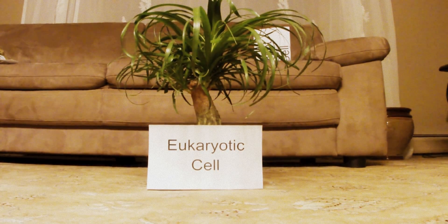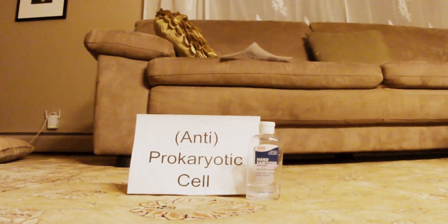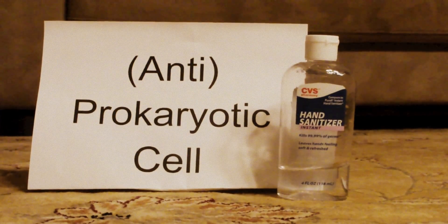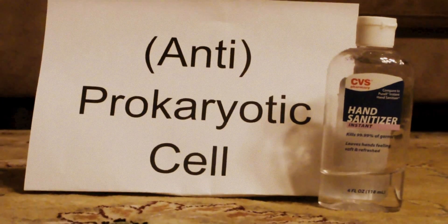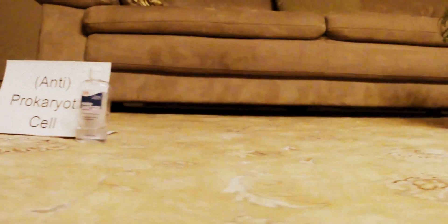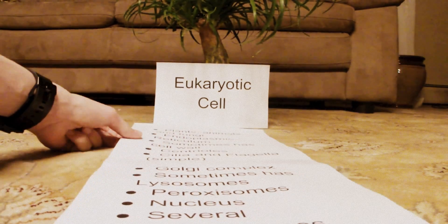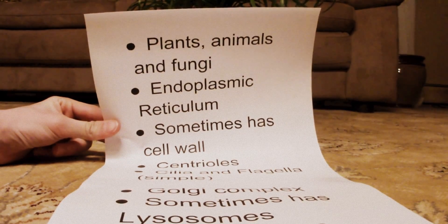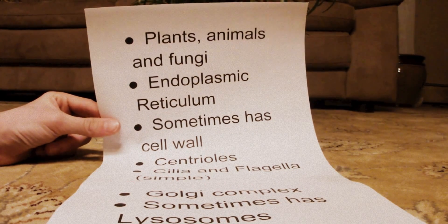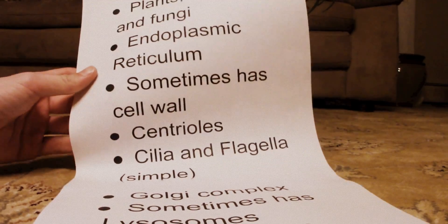Over here we have our eukaryotic cell, and over here, if I can just zoom in, we have our prokaryotic cell. Zooming out, we move on to our eukaryotic cell. To begin, eukaryotic cells are found in plants, animals, and fungi. They have endoplasmic reticulum, used for mRNA and protein transport. They sometimes have cell walls, depending on whether the cell is in an animal or a plant — animals have cell membranes, but plants have cell walls.